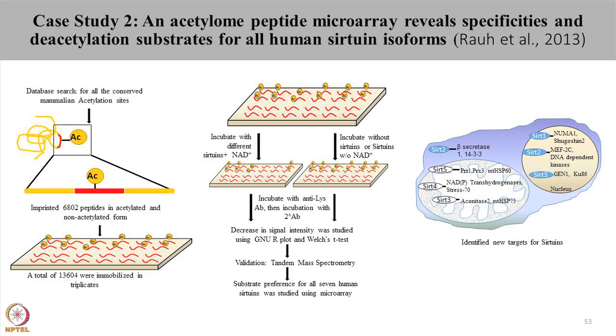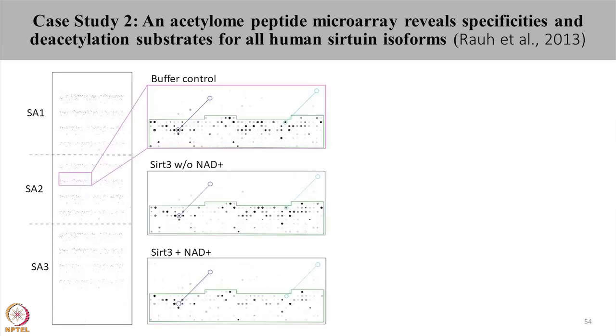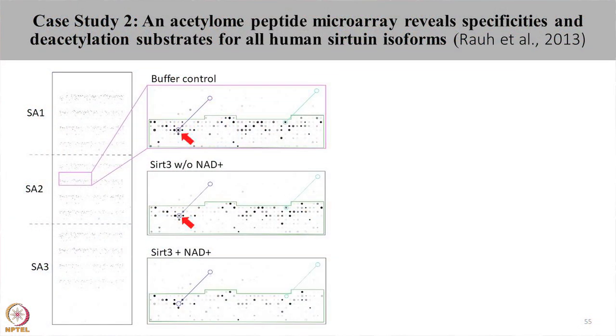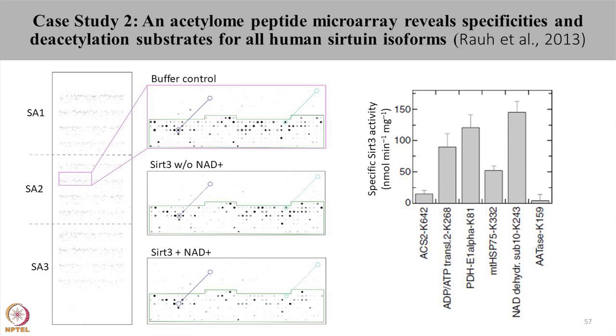In this study, they printed an array where SA represents subarray. These subarrays were treated with buffer control where no sirtuins were used, and also treated with sirtuins with and without NAD. Since sirtuins need NAD for their activity, there should be no deacetylation when NAD is absent. Indeed, no change in signal was seen in buffer control or when the array was treated with sirtuins without NAD, whereas a loss in signal intensity was seen when arrays were treated with sirtuin in presence of NAD, confirming that sirtuins need NAD for deacetylation. This graph represents the specific activity of sirtuin 3 and how deacetylation is happening for different peptides. The last protein, AATASK, was used as a negative control and showed no change in the acetylation pattern.